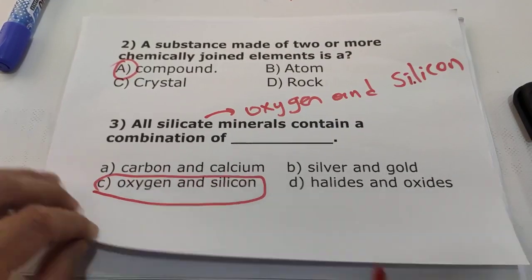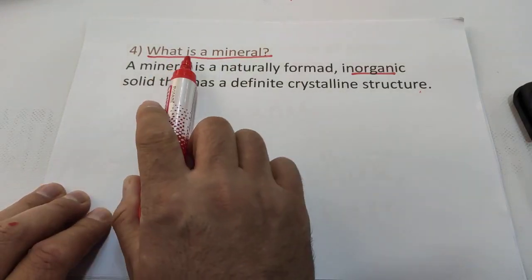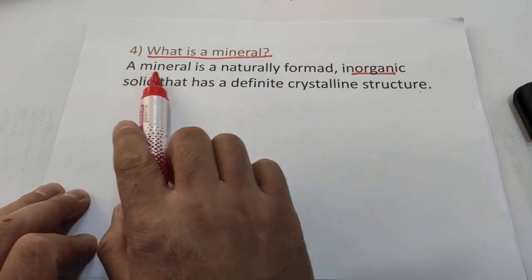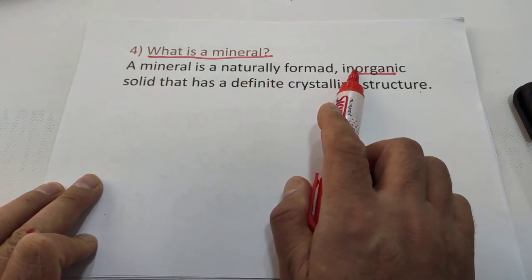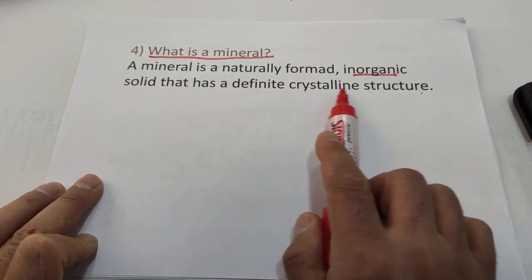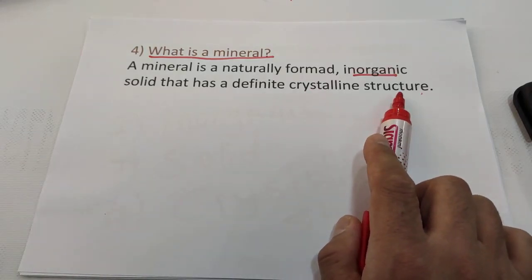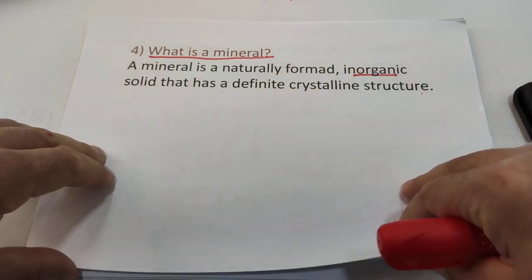Question four: what is a mineral? A mineral is a naturally formed, inorganic solid that has a definite crystalline structure. Those are the four properties of a mineral — they are naturally occurring, they are inorganic, they are solid, and they have a crystalline structure or crystalline shape.